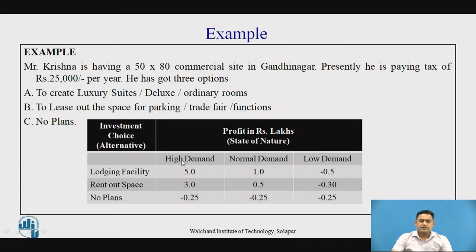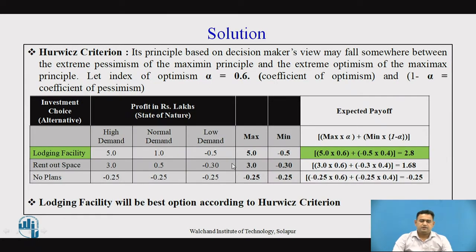With the help of this table and using various principles, we are going to make a decision. Coming to the Hurwicz criteria — it is a principle based on the view that the decision maker's outlook may fall somewhere between extreme pessimism and extreme optimism. In the present example, alpha is defined as 0.6 and therefore 1 minus alpha equals 0.4. The alternatives are lodging facility, rent out space, and no plan. The first step to find the solution using Hurwicz criteria is to identify the maximum value from each alternative.